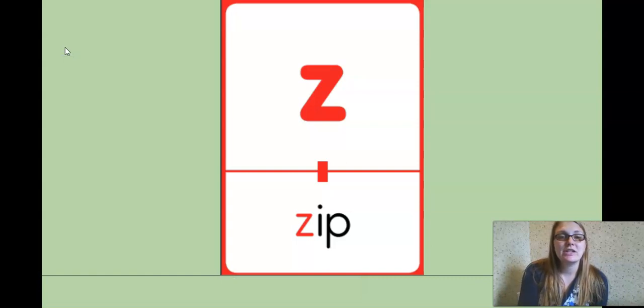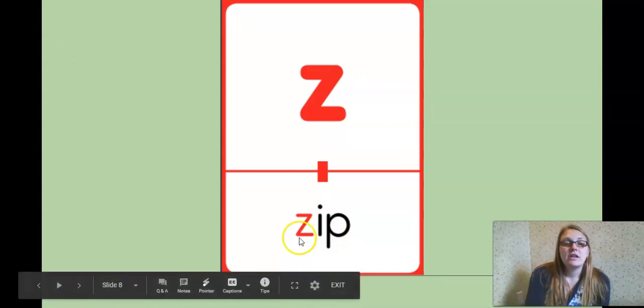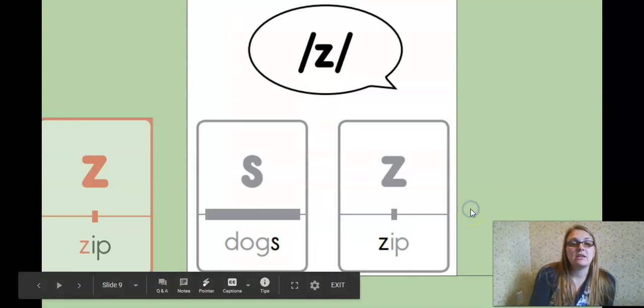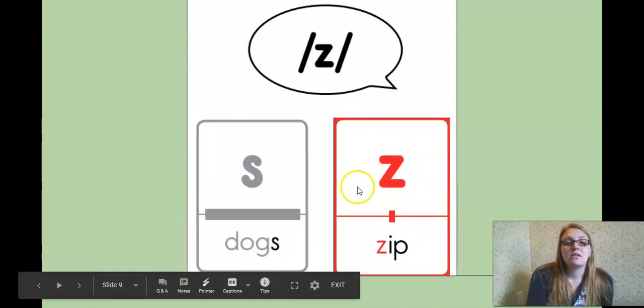Okay, our next letter is Z for zip. And if you look at our power bar, it's not a very common way to spell Z. So often when you hear the Z sound in a word, it will be a different spelling. But today we're looking at Z, the beginning of a word Z.